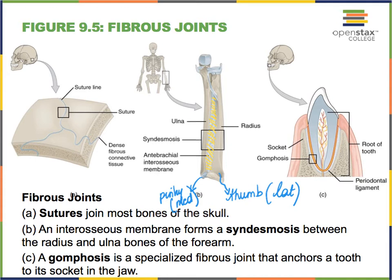The last fibrous joint is kind of an unusual one called a gomphosis — plural, gomphoses — and it always applies to our teeth. We can consider our teeth to be part of our skeleton, made up of pretty much the same material. Our teeth have to be anchored onto our maxillary bones or our mandibles with lots of short collagen fibers that grab onto the bony material to hold our tooth in its socket. We refer to that as a gomphosis. So we've just finished studying the three types of fibrous joints: sutures, syndesmoses, and gomphoses.